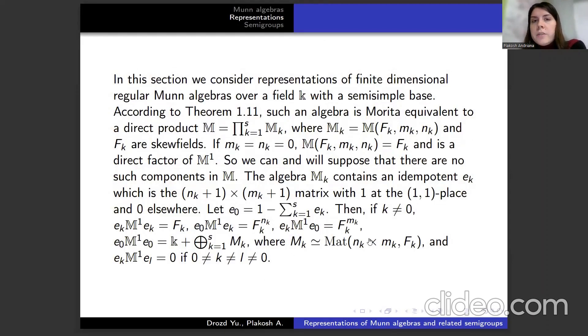In this section, we consider representations of finite-dimensional regular Munn algebras over field k with semi-simple base. According to the theorem, such an algebra is Morita equivalent to a direct product M, where Mₖ equals M(Fₖ, mₖ, nₖ) and Fₖ are skew fields.